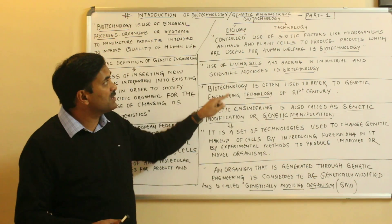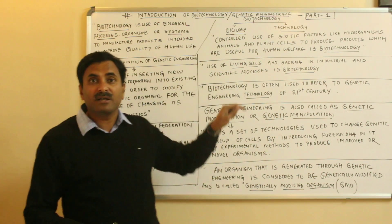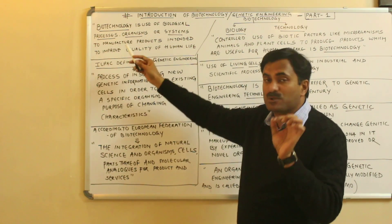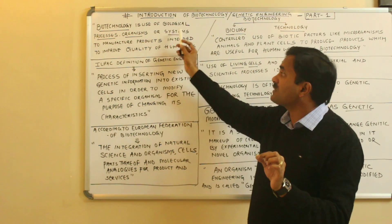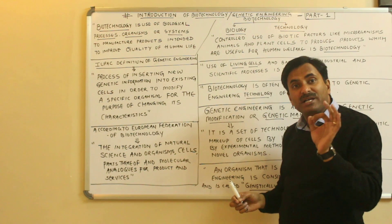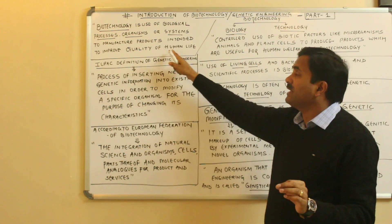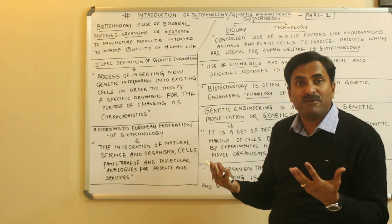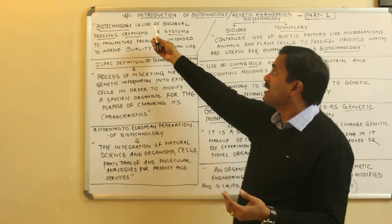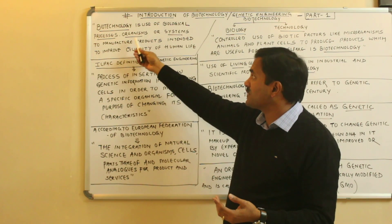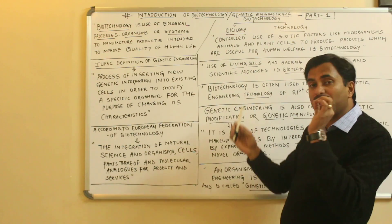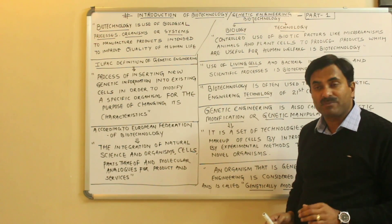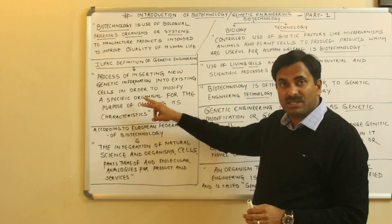There are various definitions of biotechnology on which you have to concentrate. The very first definition is: biotechnology is the use of biological processes, organisms, or systems to manufacture products which are intended to improve the quality of human life. This is called biotechnology.